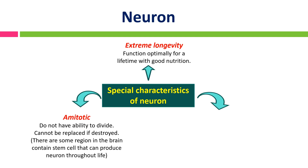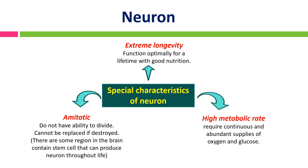The third characteristic: neurons have an exceptionally high metabolic rate. Neurons have the highest energy demand and require a continuous and abundant supply of oxygen and glucose. With only 2% of body weight, the brain uses up to 20% of the whole body's energy budget.